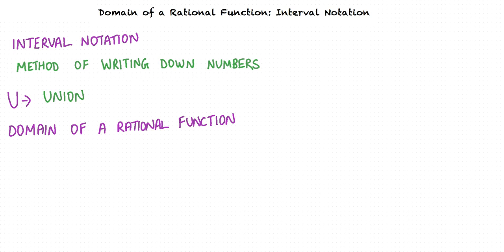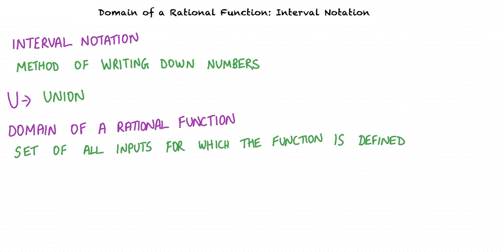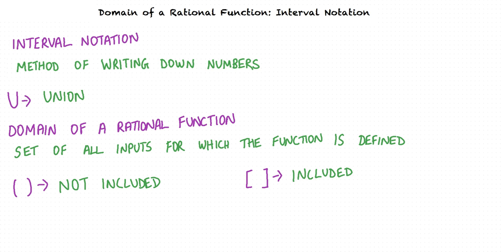What do you mean by domain of a rational function? Domain is the set of all input numbers for which the function is defined. Domain is usually defined by the minimum and maximum numbers of the set, included within either a parenthesis or a bracket. We use a parenthesis when the minimum and maximum numbers in the set of inputs are not included in the domain. On the other hand, we use brackets when the minimum and maximum numbers in the set of inputs are included in the domain.